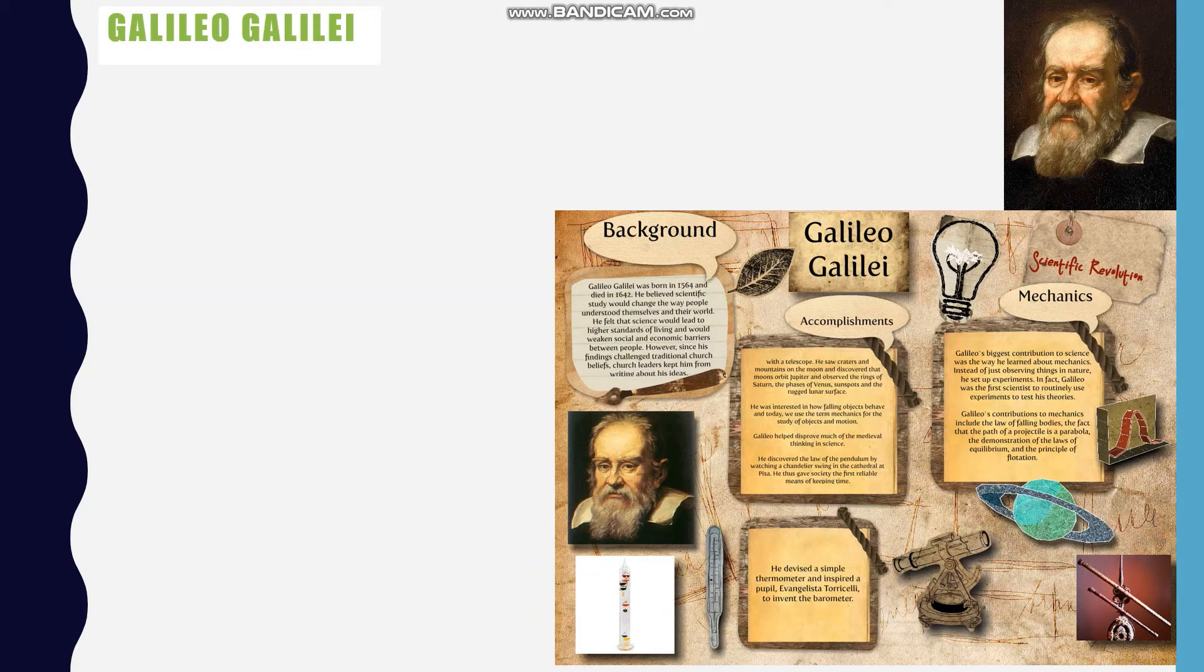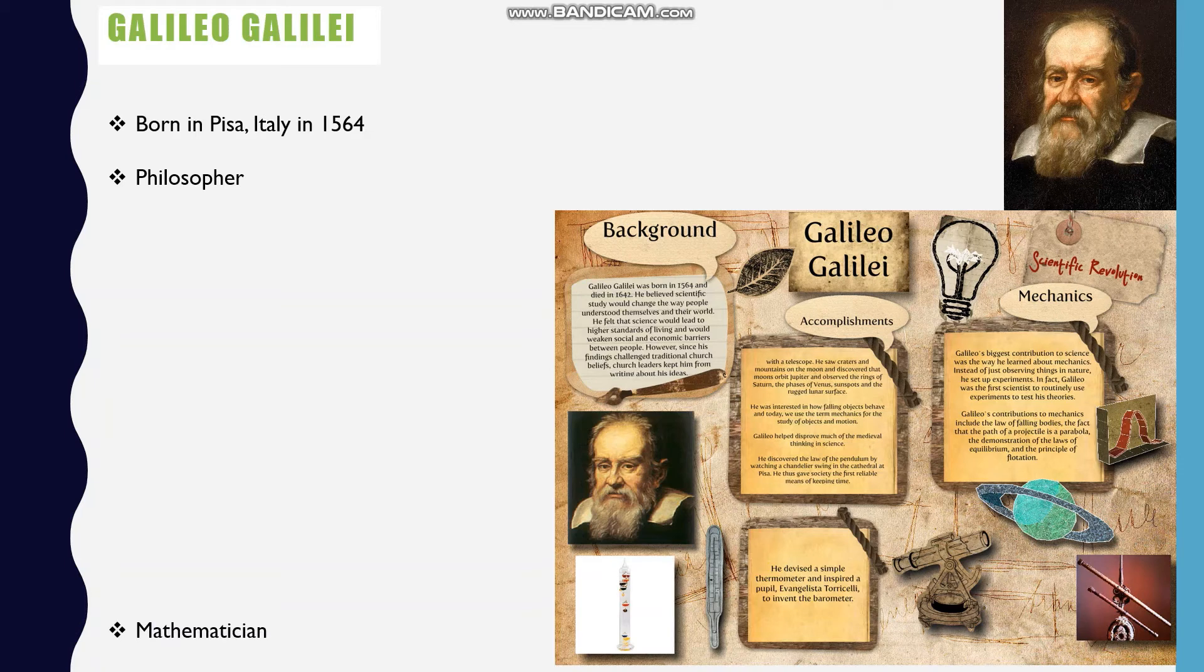Now let's look at Galileo. Galileo was born in Pisa, Italy in 1564. He was a philosopher because he thought about many things. He thought about many things in nature and asked how they occurred. He was a mathematician. He lectured mathematics at the University of Pisa for over 10 years.